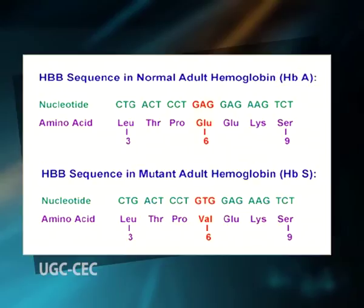This severe inherited anemia results from a single amino acid change within the hemoglobin molecule. A non-polar valine residue is present where a charged glutamic acid is normally located. This change in hemoglobin can have a different effect on the shape of red blood cells, converting them from disc-shaped cells to sickle-shaped cells, which tend to clog small blood vessels, causing pain and life-threatening crisis.